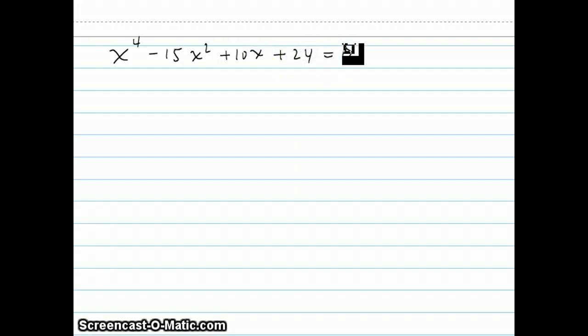Now, this is known as a depressed quartic equation, since there's no x to the third term. And I'm going to show you how Descartes came up with the process for solving any equation of this type by intersecting a parabola with a circle. And here's the process. First of all, the parabola is going to be y equals x squared.